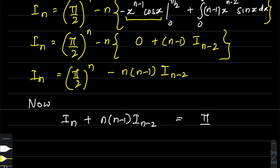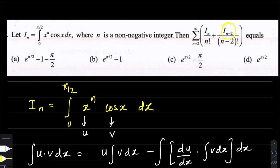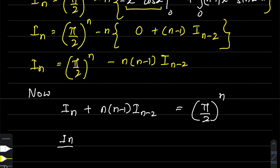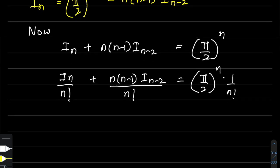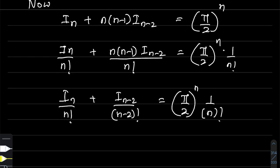Bringing n·(n-1)·I_(n-2) to the left-hand side and dividing through by n! — since the summation involves I_n/n! — the factorial simplification gives us: n·(n-1) in the numerator cancels with n! leaving (n-2)! in the denominator. This yields the recurrence relation: I_n/n! + I_(n-2)/(n-2)! = (π/2)^n / n!.